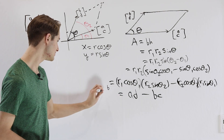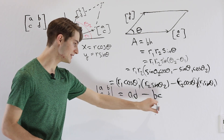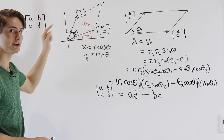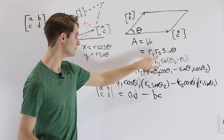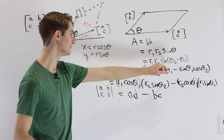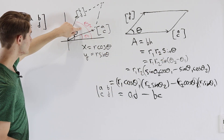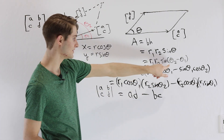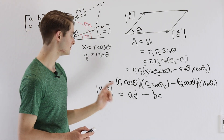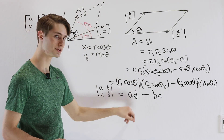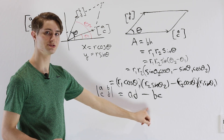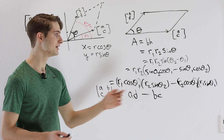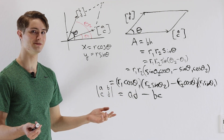And there we have it. The determinant of a 2x2 matrix ABCD is equal to AD minus BC. That comes from the fact that the determinant is the area of the parallelogram, written as R1·R2·sine(theta2 - theta1). We expand that using the sine sum formula, then express everything in polar coordinates to get our final result. So if anyone asks why the determinant of a 2x2 matrix equals AD minus BC, you can say: it's the angle sum formula for sine.